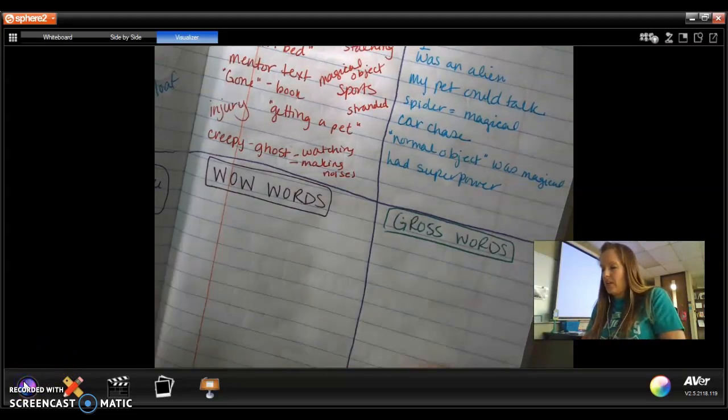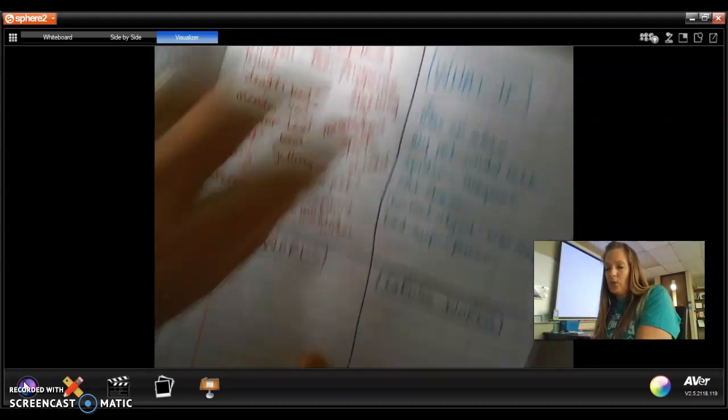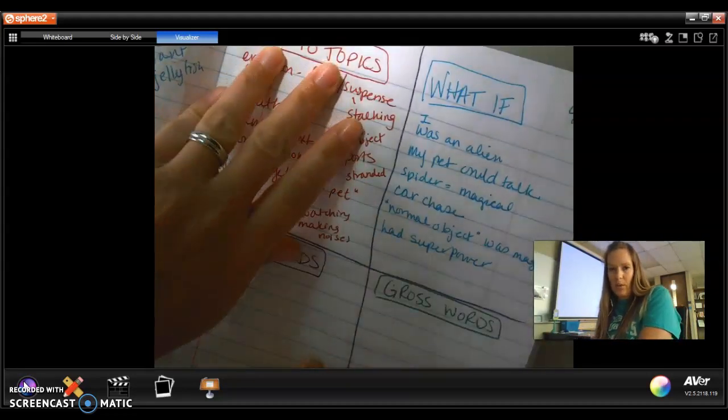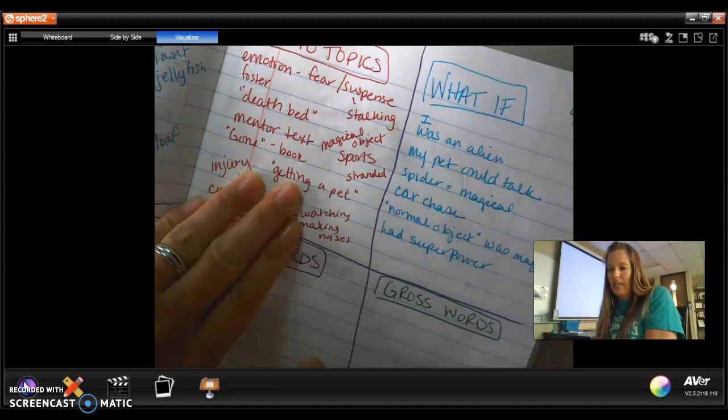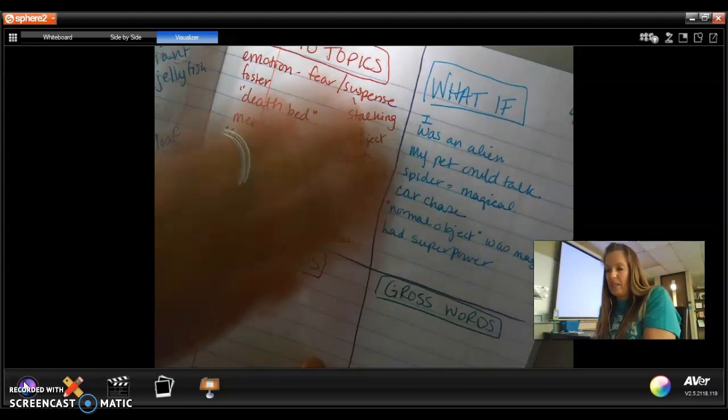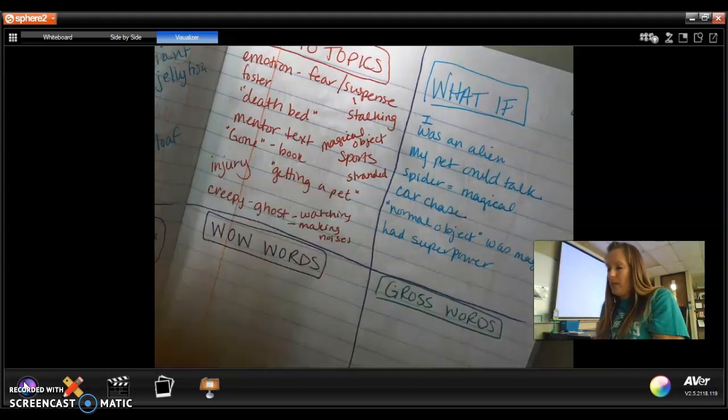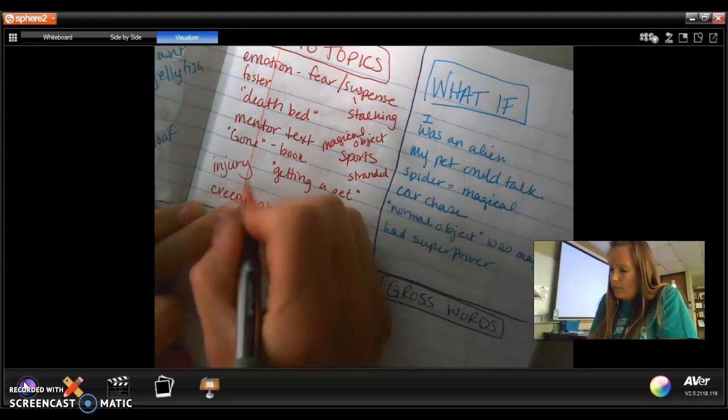These last two sections down here are just lists of words. So I probably won't spend as much time here. The go-to topics is a really important chunk because these are the ones that you go back to over and over again and apply some of your elements from your other lists into these types of stories, fiction or nonfiction. I also do like a fighting a monster.